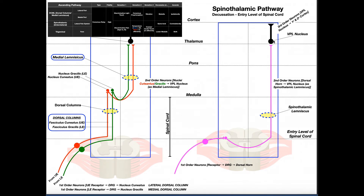The third-order neuron carries information from the thalamus up to the cortex, the highest brain center — specifically the primary and secondary somatosensory cortex. That is how information travels from the periphery into the spinal cord and up to the cortex.